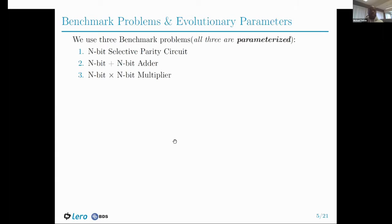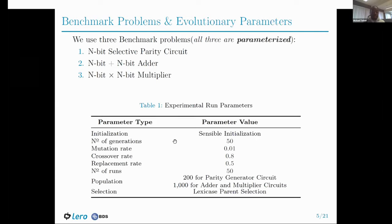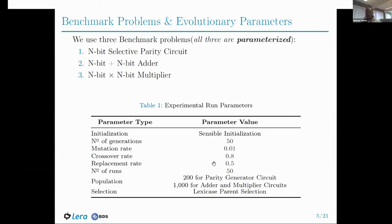In our work, we selected three benchmark problems representative of the evolutionary circuit design literature: a selective parity circuit, an adder, and a multiplier. All three benchmark problems are parameterized. For the experiment, we use sensible initialization, and each independent run uses 15,000 number of generations. Our mutation rate is 0.01, crossover rate is 0.8, replacement rate is 0.5, and the number of independent runs is 50. We use a population size of 200 for the parity circuit and 1000 for the adder and multiplier circuits. We use Lexicase parent selection as our selection technique, which is well known to be very efficient on program synthesis benchmarks.